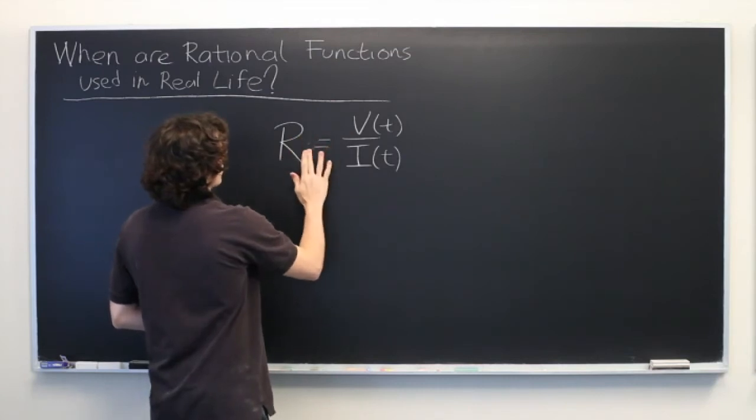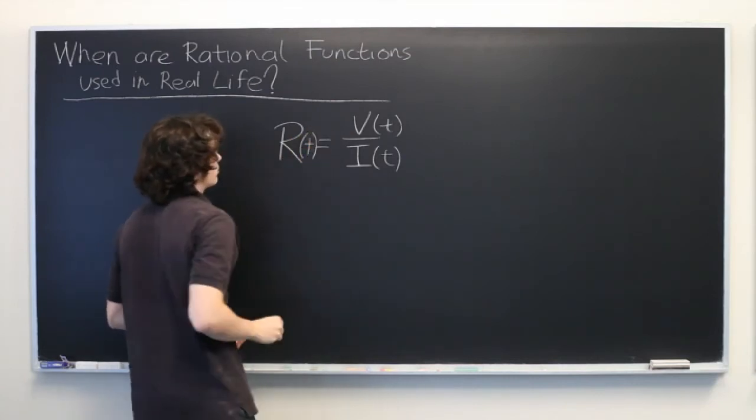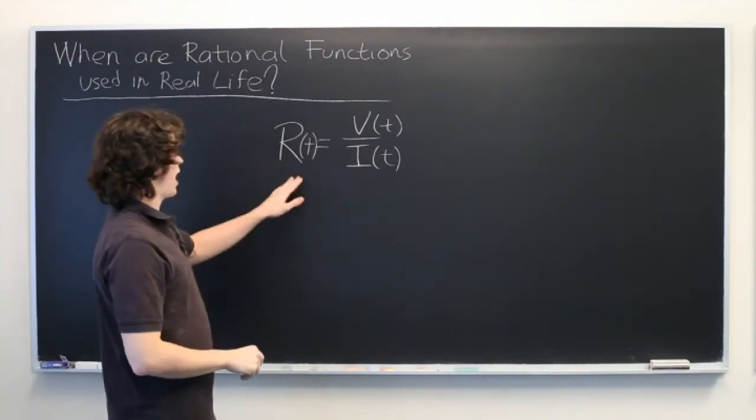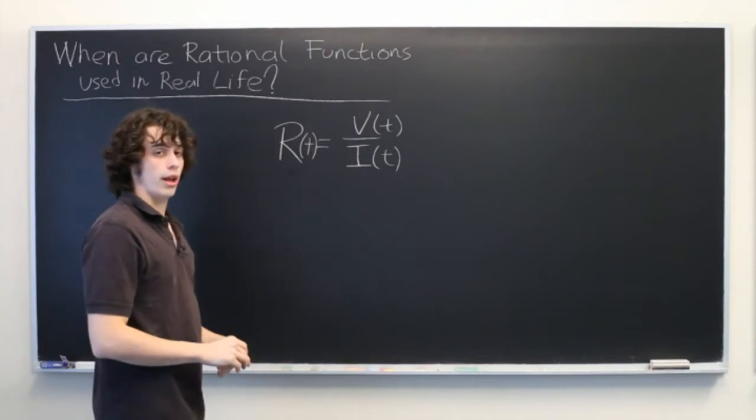Then of course, resistance would also be varying with respect to time. But in order to accurately describe how resistance is varying over time, we need to create a rational function.